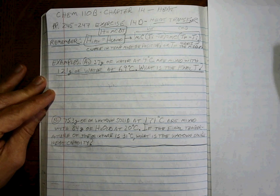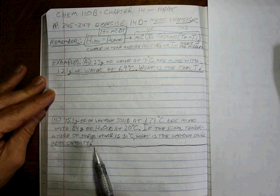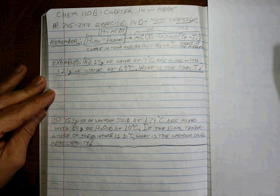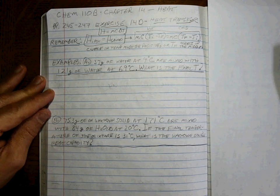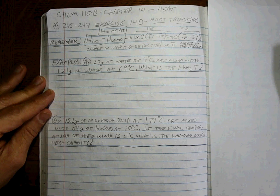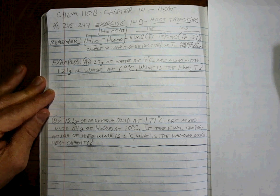Alright, so let's take a look at a couple of problems to see how it works. There are two different types. One is going to ask you to find the final temperature and the other one is going to ask you to find one of the unknowns over here. Okay, so hit your pause, make sure you know what you're doing, give it your best shot.